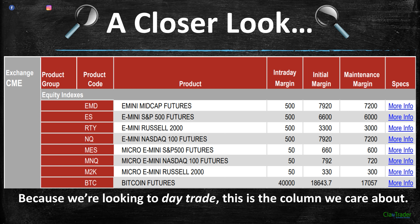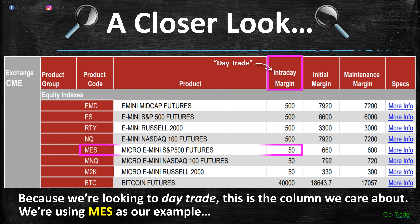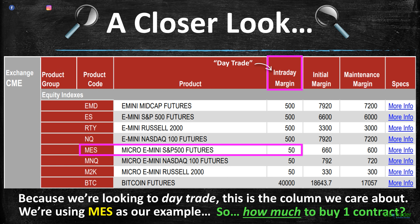Getting back on topic — because we're looking to day trade, the column we care about is intraday margin. Here's an example where this broker uses 'intraday margin' rather than 'day trading margin' — just means the same thing. We're using MES as our example, so we look at that row and the intraday margin column. And $50 is the cost to buy one contract. We finally arrived — $50 for this broker. Remember it can be different: maybe $100, maybe $70, maybe $40 depending on the broker.